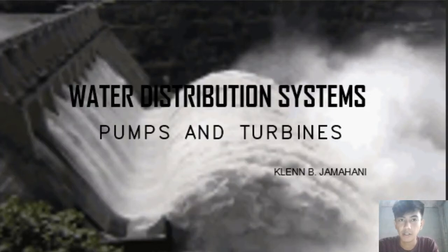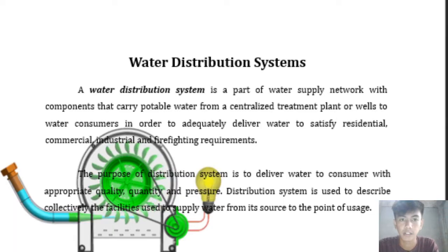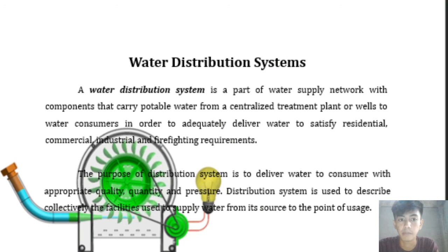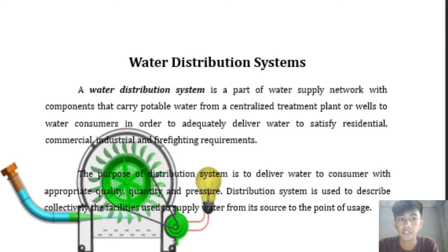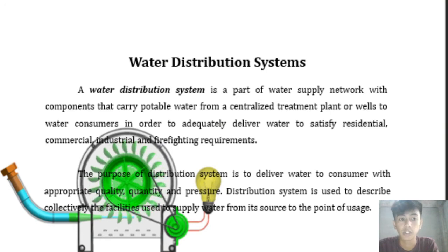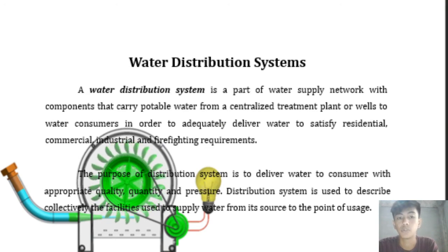My name is Glenn Giamani and I'm tasked to report about water distribution systems, specifically about pumps and turbines. The water distribution system is a part of the water supply network with components that carry potable water from a centralized treatment plant or wells to water consumers, in order to adequately deliver water to satisfy residential, commercial, industrial, and firefighting requirements.